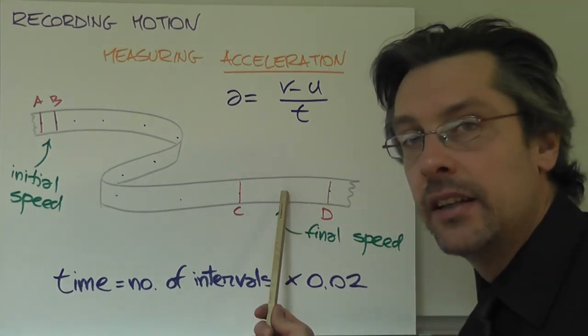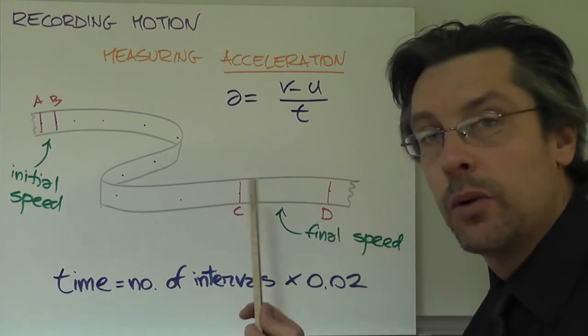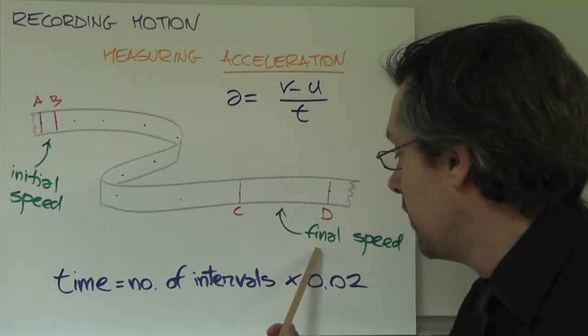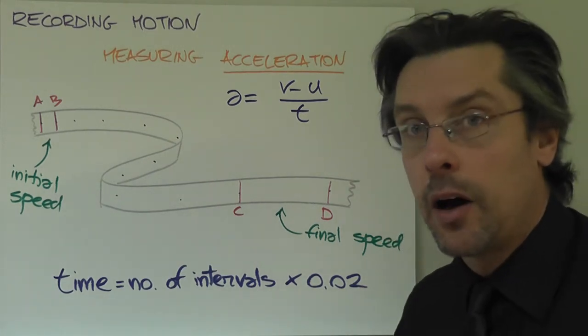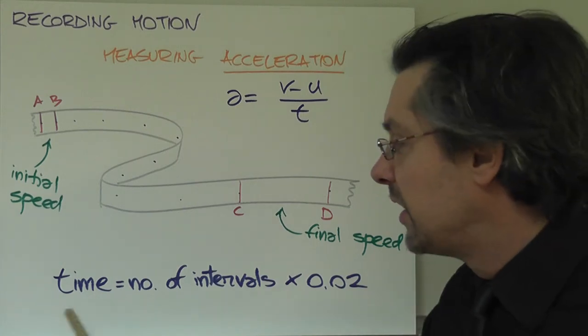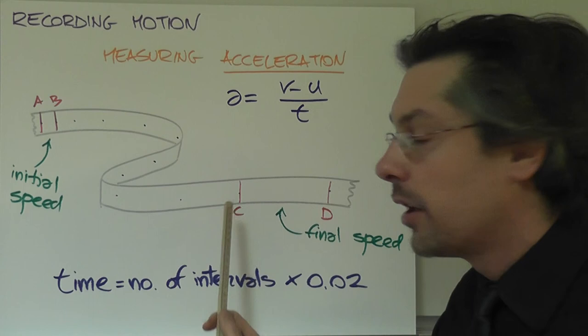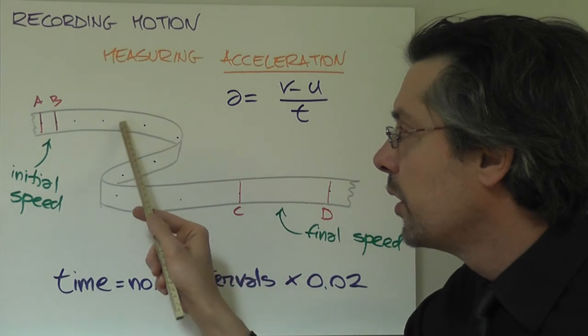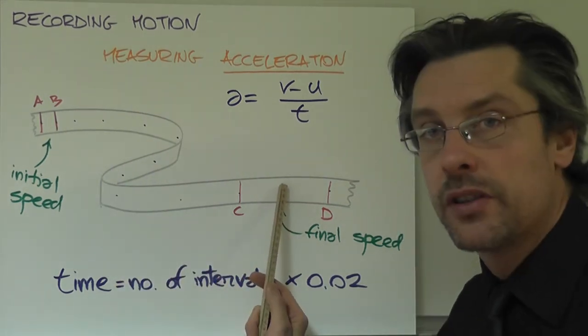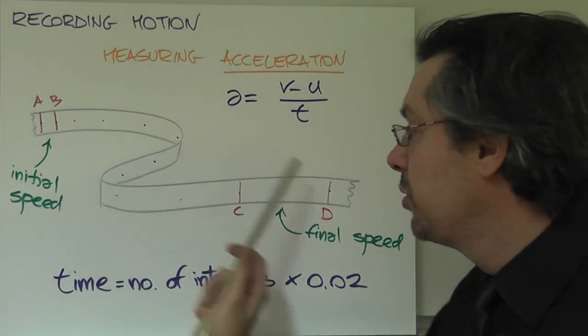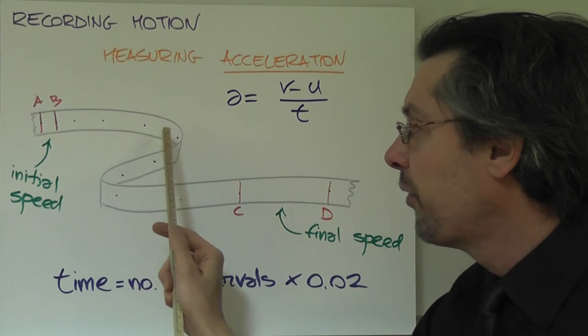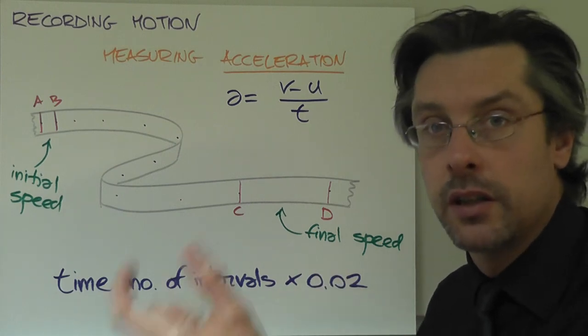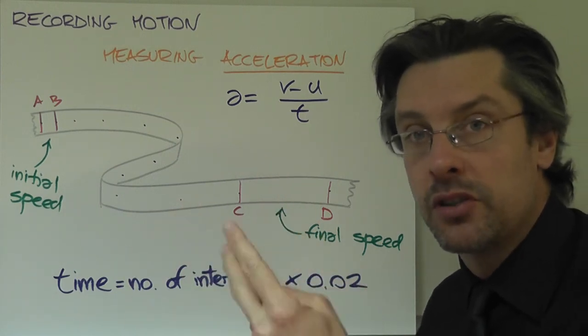Then we go at the very end of our tape. Again, with our ruler, we measure the distance, we divide by 0.02, and that will give us the final speed. How about the time then? The time from here to here, you can find by just simply counting how many intervals you have from these two points to these two points. And the time taken from here to here will be the number of intervals multiplied again by 0.02, which is the time interval between two consecutive dots.